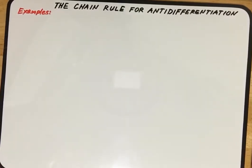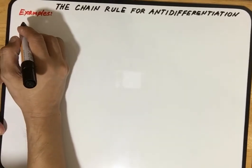Okay class, let us continue our discussion on the chain rule for antidifferentiation. Last time we discussed the concept and example number one. This time I'm going to give you the second example.